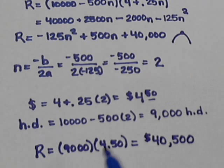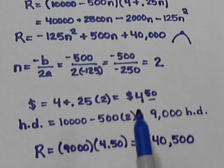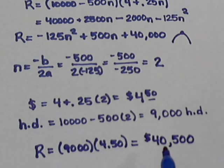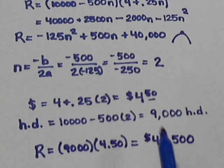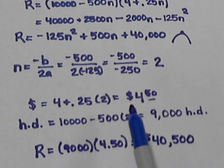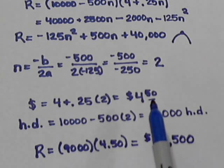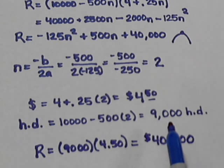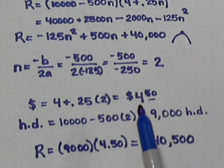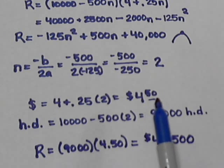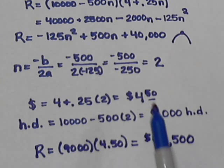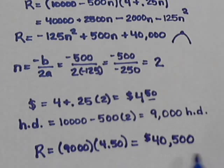So based on the information this baseball stadium has, in order to bring in the most money from hot dog sales, we need to charge $4.50. We're going to lose some sales, but the extra money we earn for each hot dog we do sell will help us reach this maximum revenue.